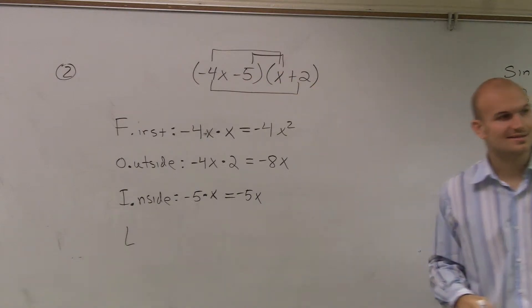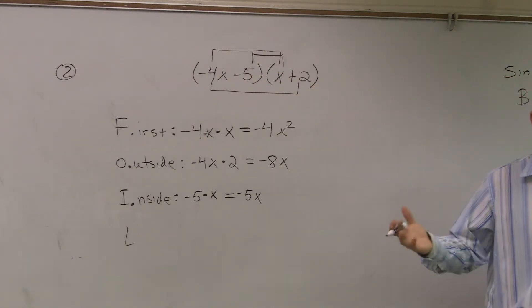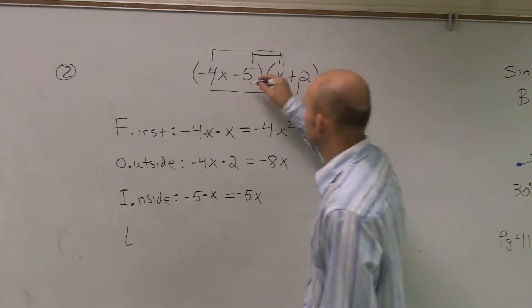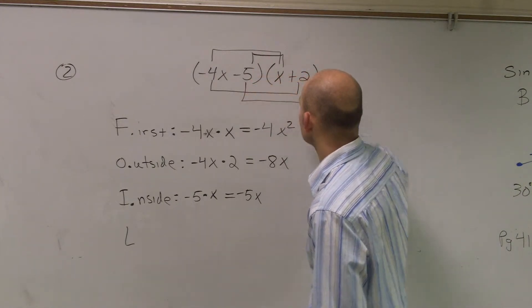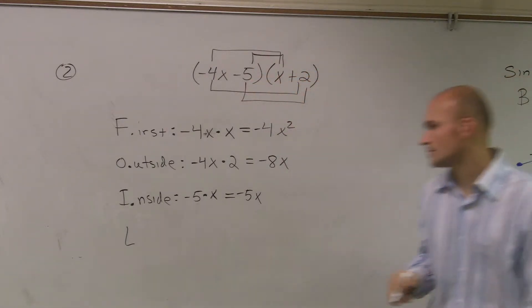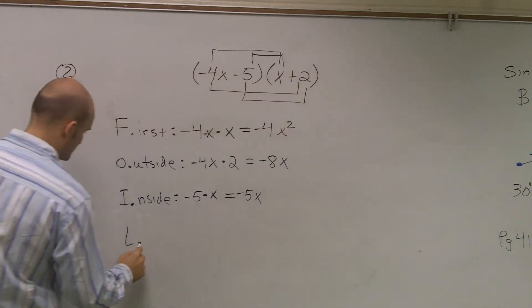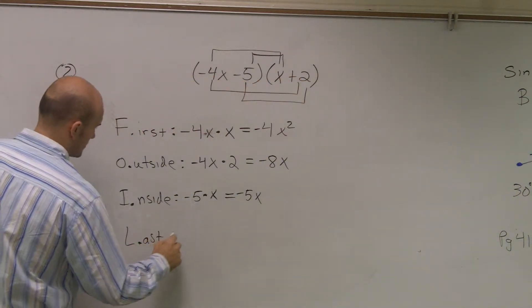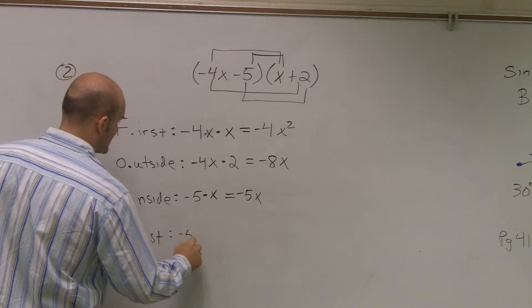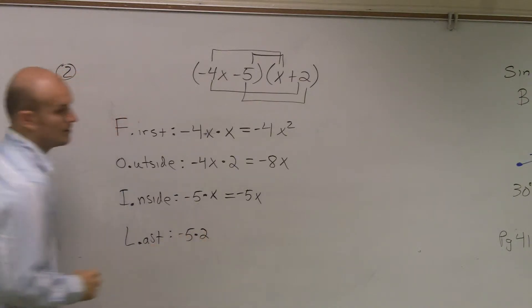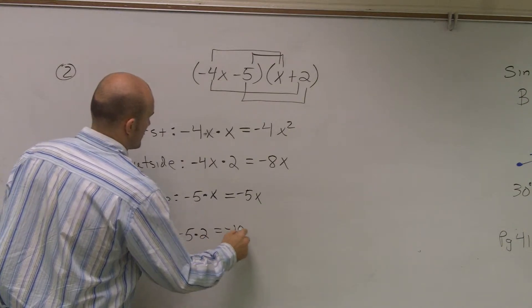And then lastly, we have L, which is for last. So you look in the binomial, and the last two terms are negative 5 and 2. So I multiply negative 5 times 2. And negative 5 times 2 equals negative 10.